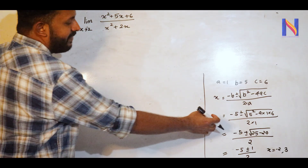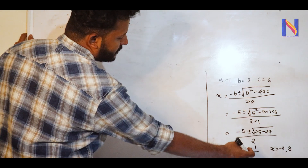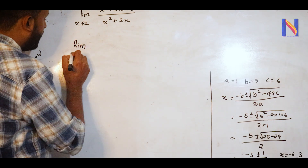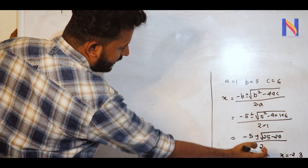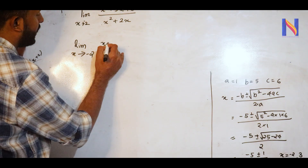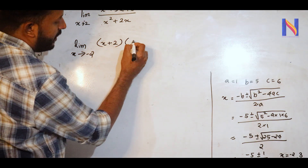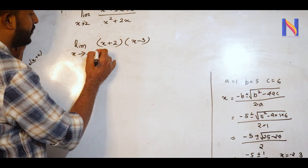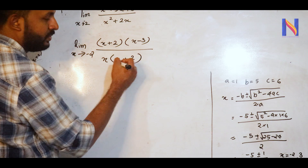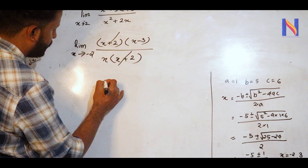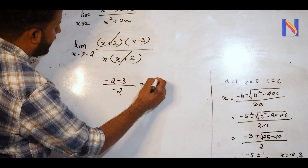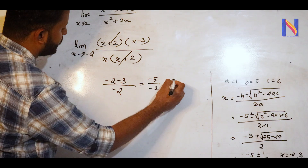For the next problem, values are directly substituted. So we get −5 + 4 − 1 over 2, which gives −2 over 2. The answer is −1. Let's consider limit as x tends to −2 of (x² + 5x + 6). After canceling, we get 5 divided by −2, which means 5/2. So that's the answer.